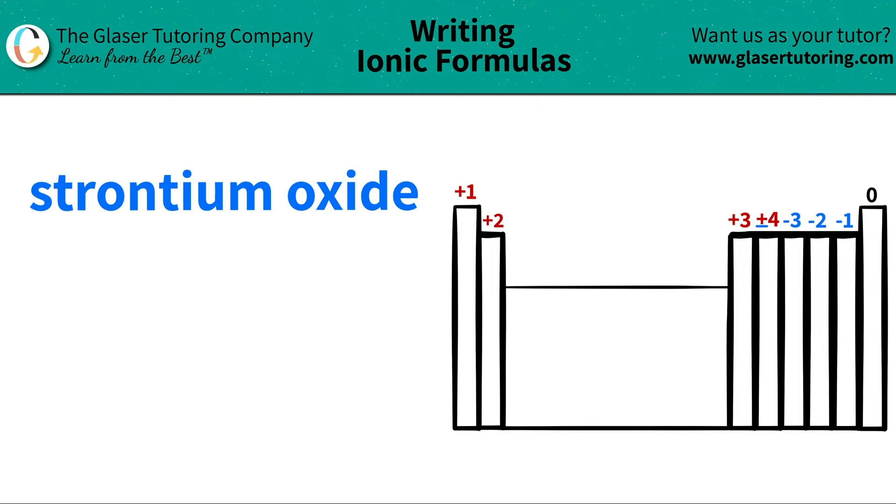Today we are going to write the formula for the ionic compound strontium oxide. Let's see where these elements are located on the periodic table and then we will write the formula.